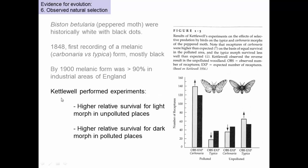There was a researcher called Kettlewell who decided to perform some experiments to see if it was this color change of the trees that was causing this to occur. What he did was go to polluted areas and unpolluted areas, and he took a bunch of moths — the typica type and the carbonaria type — and released them. Here he is releasing both carbonaria and typica. The black bars show the ratios of the ones released. He released more carbonaria than typica in the polluted area, and when he recaptured them later, he was able to recapture more of the carbonaria and fewer of the typica.